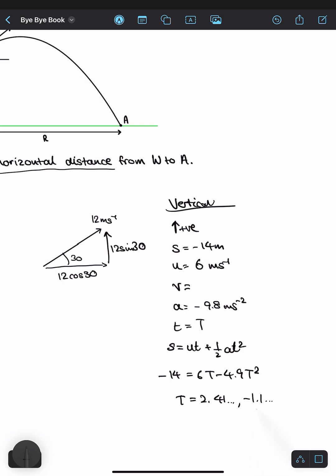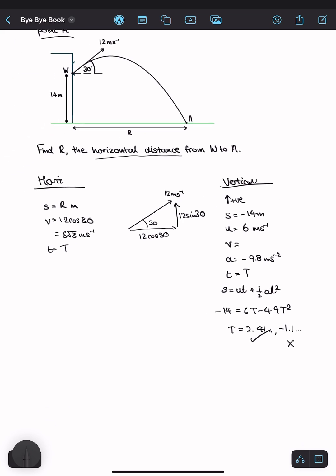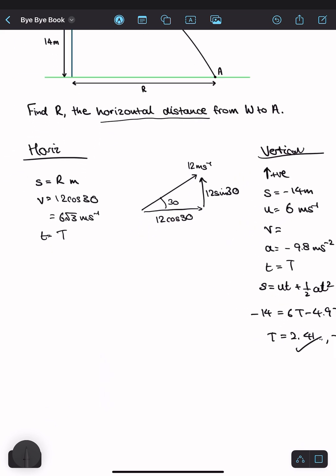I can disregard this since time is not negative. So now I have my time and I have my velocity horizontally, my horizontal distance, which is r, is equal to the velocity, which is 12 cos 30 times my time, which is 2.41. And that is 25.0 meters to three significant figures.